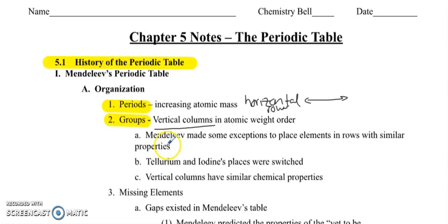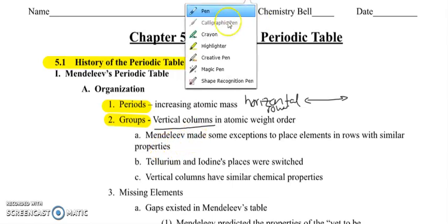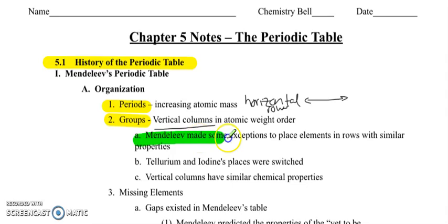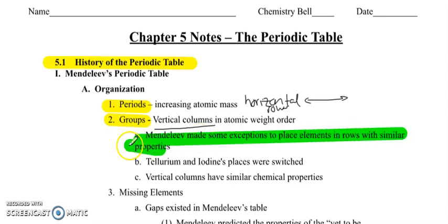Mendeleev made some exceptions to place elements in rows with similar properties. So he wasn't always exactly following the rule that he made up. When things seemed like they were out of place, he allowed that to happen and put them into different categories.